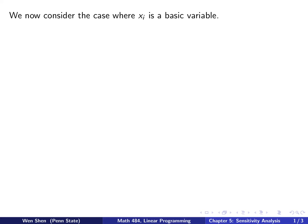Hello everyone, welcome to video 7 of chapter 5. In this video, we continue the example we had in the previous video. We now consider the case where you change ci and the xi is a basic variable. The discussion here will be quite different.